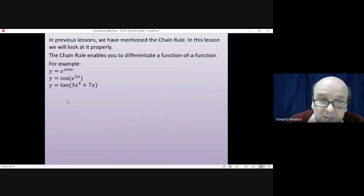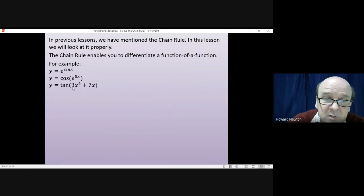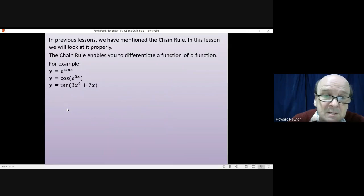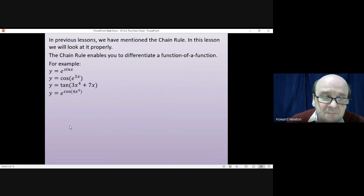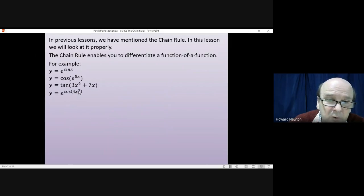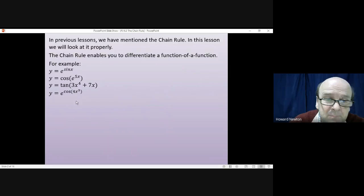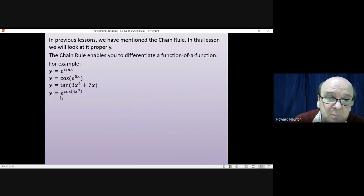Something like the tangent of 3x⁴ plus 7x — 3x⁴ plus 7x is a function in its own right, and you'd work out that function and put it into tangent. Or something like e to the power of the cosine of 4x cubed is actually a function of a function of a function. The inside function would be 4x cubed; you'd put that into cosine, and then that result into the exponential function e.